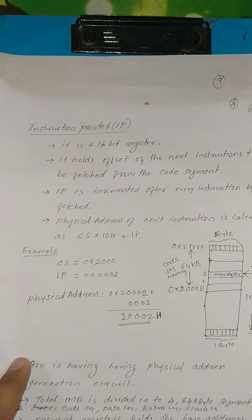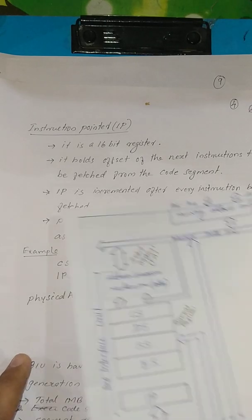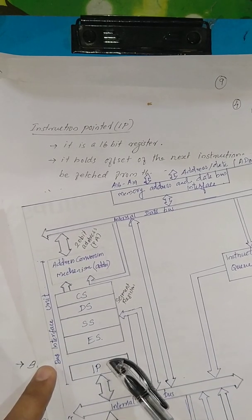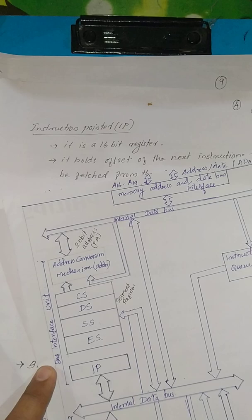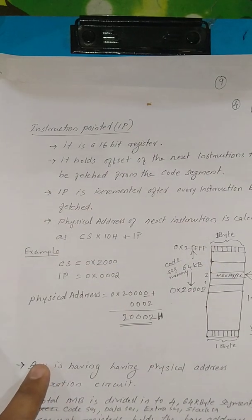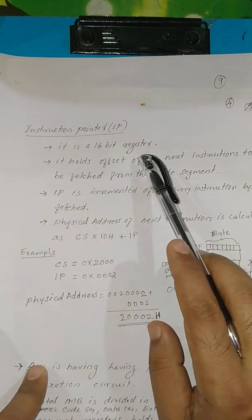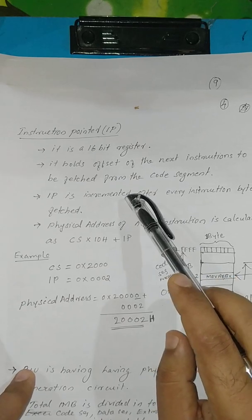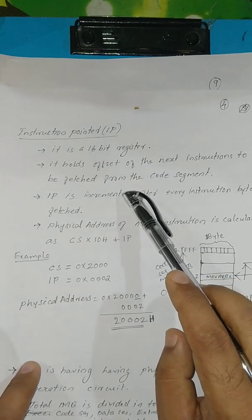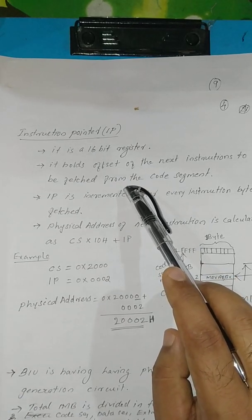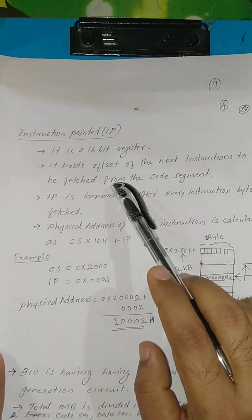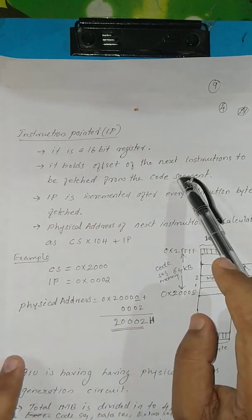The next part is the Instruction Pointer. The Instruction Pointer is a 16-bit register, and it holds the offset of the next instruction to be fetched from the code segment.